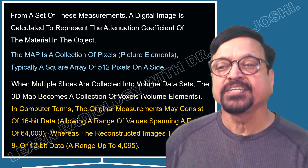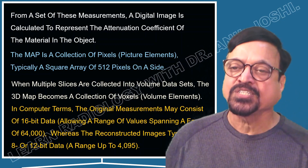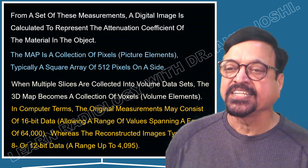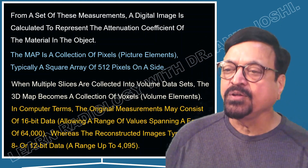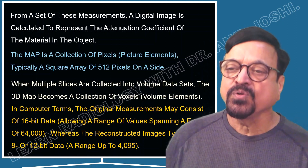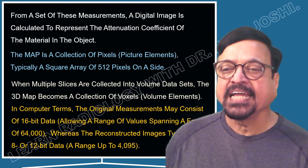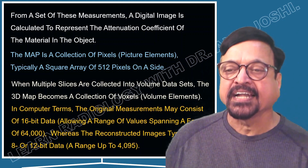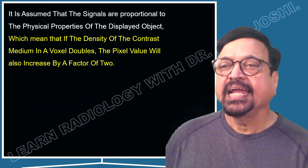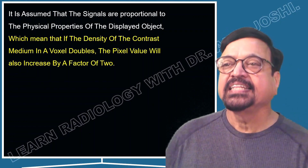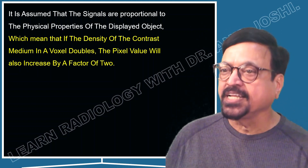In computer terms, the original measurements may consist of 16 bits of data, allowing a range of values spanning a factor of 64,000. The reconstructed images typically are 8 to 12-bit data, giving a range of 4,095. It is assumed that the signals are proportional to the physical properties of the displayed object.